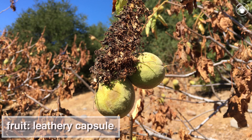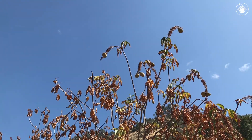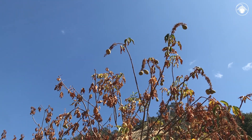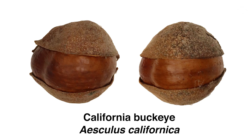The fruit is a leathery capsule that develops in late summer and ripens in the fall. Hanging on a pendant stalk, there is often one fruit per inflorescence, but sometimes a few more. When they open, they reveal beautiful shiny brown seeds inside. The round seeds peer through the seed coverings like eyes, giving Aesculus californica its common name — California buckeye.